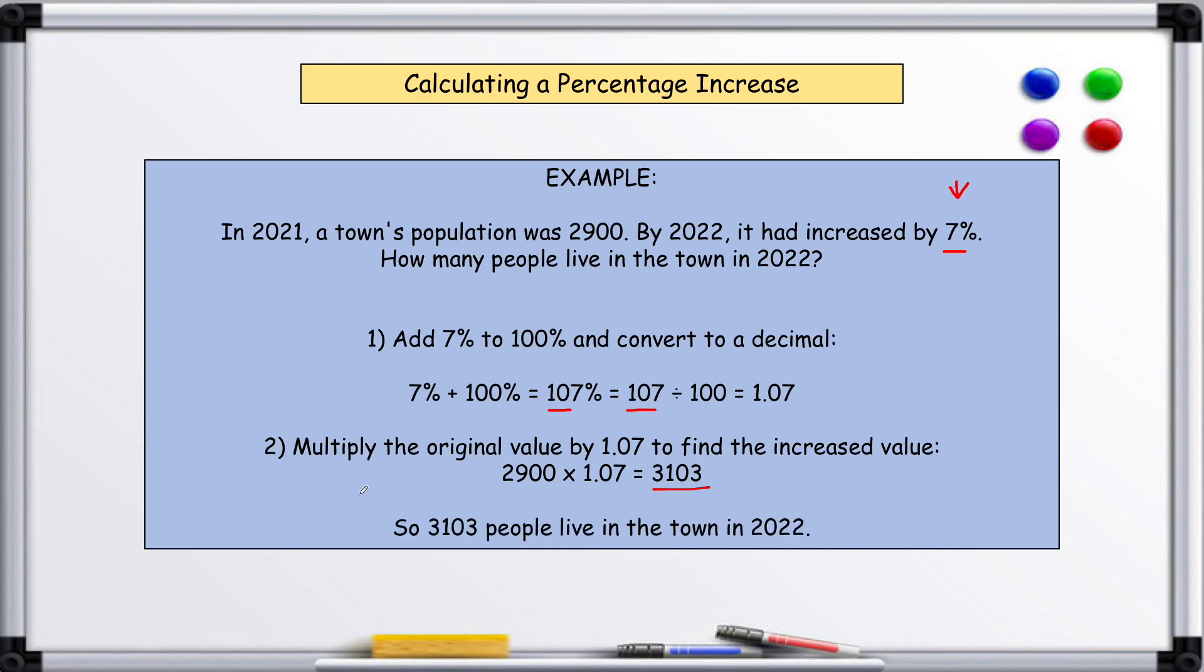You could also do this by finding 7% of 2,900. So you would divide 2,900 by 100, then multiply it by 7. That way you would get 7%, and then you could add it on. But this way it's a little bit easier—you just multiply it by 1 point and whatever the percentage increase is. If it's a 100% increase, you would multiply it by 2.